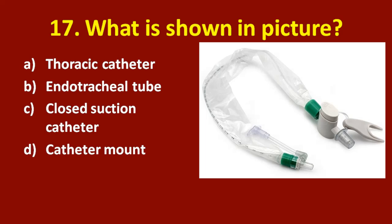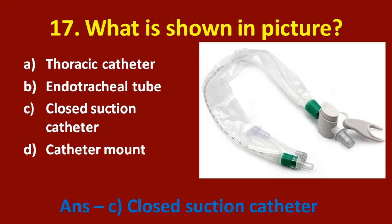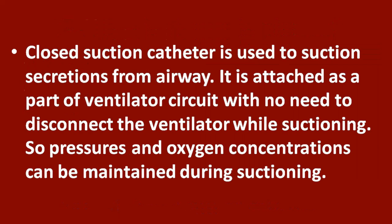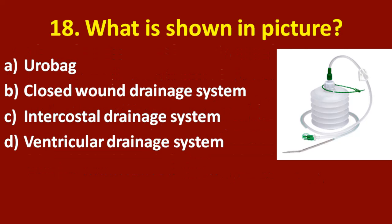Seventeenth question: what is shown in the picture? Option A: thoracic catheter. Option B: endotracheal tube. Option C: closed suction catheter. Option D: catheter mount. The correct answer is option C, closed suction catheter. A closed suction catheter is used to suction secretions from the airway. It is attached as part of the ventilator circuit with no need to disconnect the ventilator while suctioning.